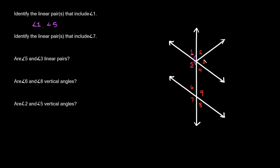Do we have any other linear pairs? Could you say that 1 is a linear pair with angles 2 and 3? No, because we're talking about pairs — pairs come in 2. That would basically be a triplet. So 1, 2, and 3 are three different angles — that's not a pair. Even though these three angles do add up to 180 degrees, they're not a pair.